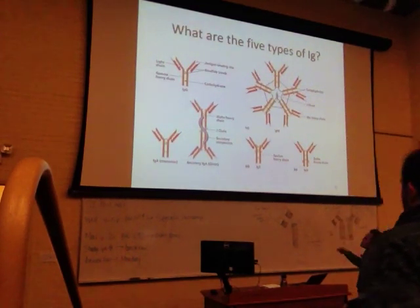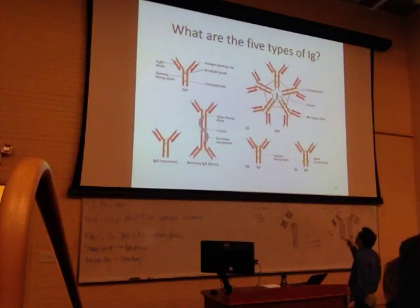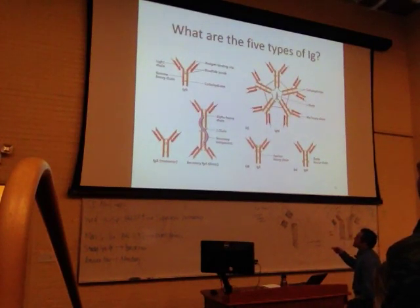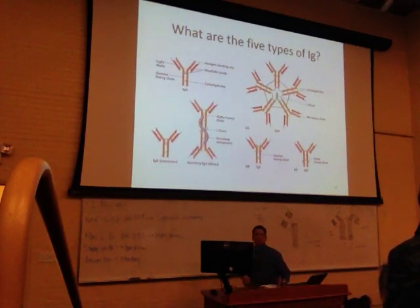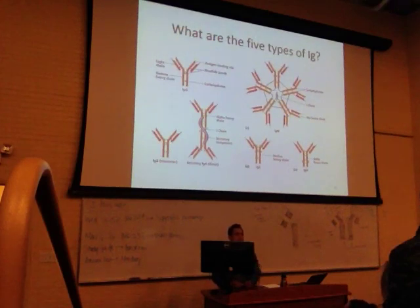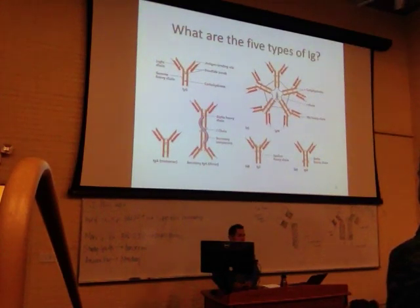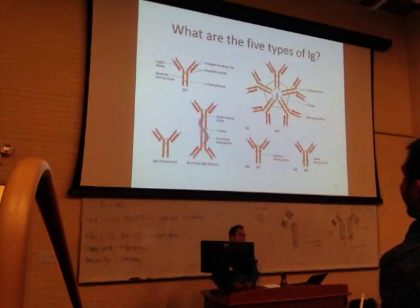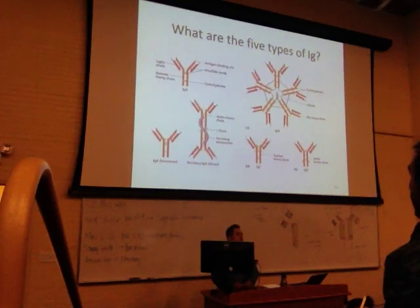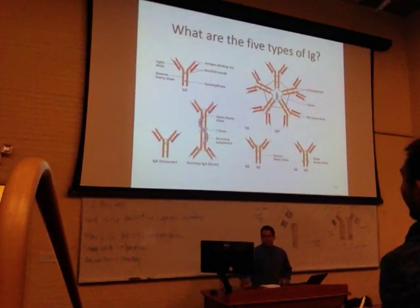Looking at pictures: IgM is the pentamer, the biggest one; the others are monomers, and IgA is the dimer. Monomers have a valence of two, the dimer has a valence of four, and the IgM pentamer has a valence of ten. Alright, let's take a quick break.